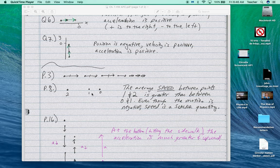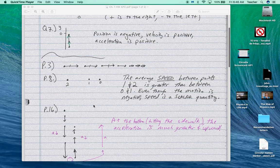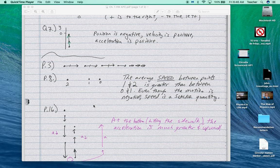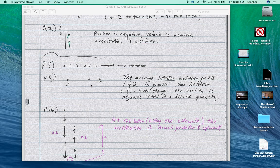For P8, we've got 0, 1, and 2. It was asking between which region, 0, 1, 1, and 2, is the average speed greater? The average speed is greater between 1 and 2. So the distance between here is greater. We would assume that the same time interval between 0 and 1 and 1 and 2.